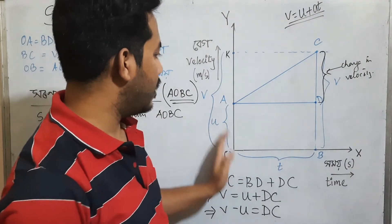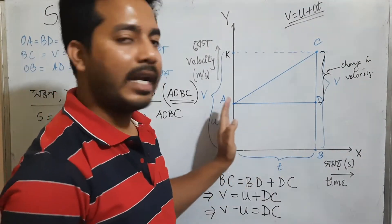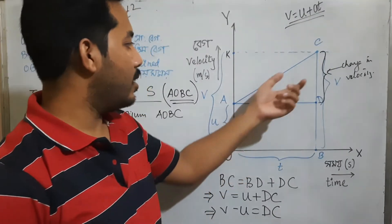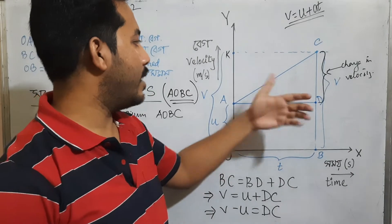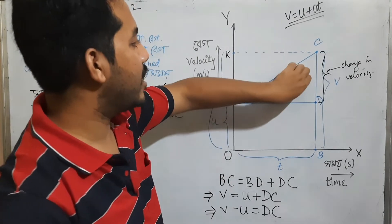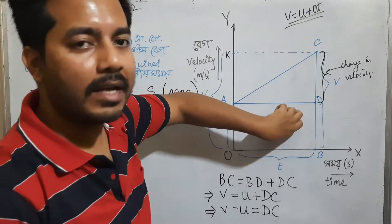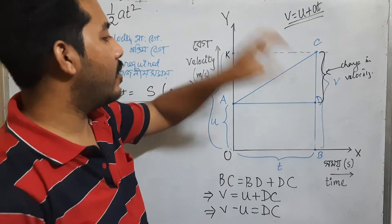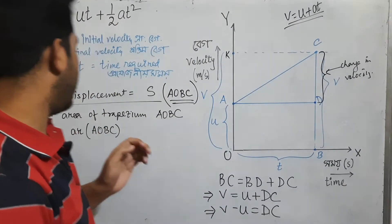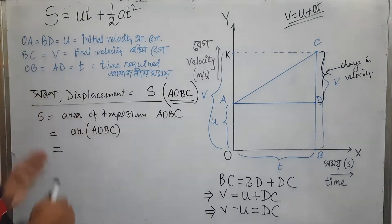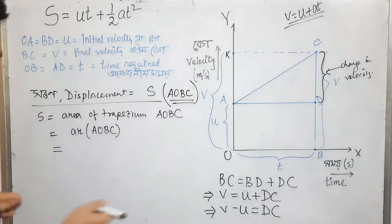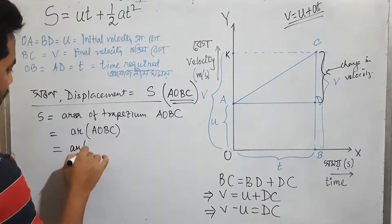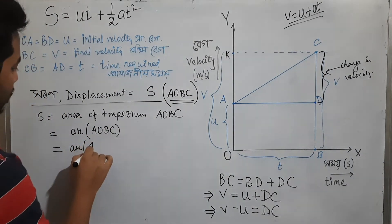I'm going to take the area. That is right — the area of the right triangle.